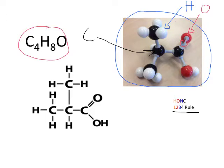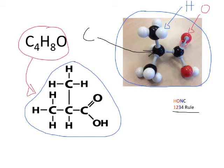Up here was the molecular formula. Down here is what we're going to call a structural formula - it shows you the shape of the molecule. One little clue: the carbons are nearly always joined to each other, and it takes a little bit of practice to do this, but that's just something you should want to assume. We'll talk more about this in class, about how to work out this arrangement.